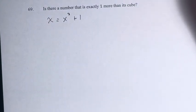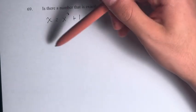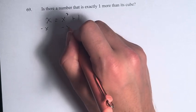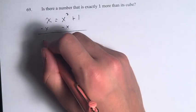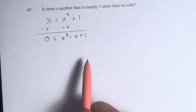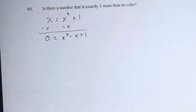Now, if we had a quadratic or a linear equation, it'd be pretty easy to solve this. But we have a cubic equation here. So if we subtract x on both sides to get everything on one side, we have zero is equal to x cubed minus x plus one. This isn't really an equation that's easy to solve.